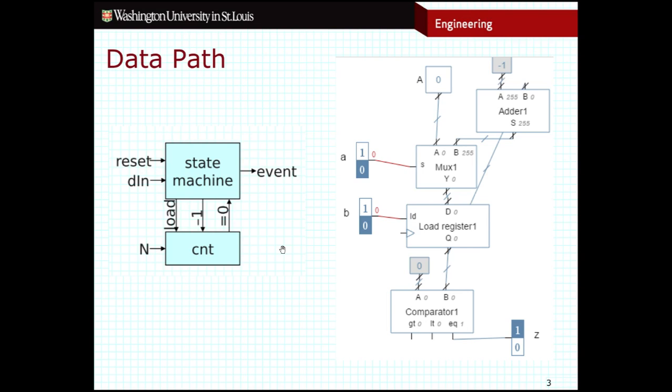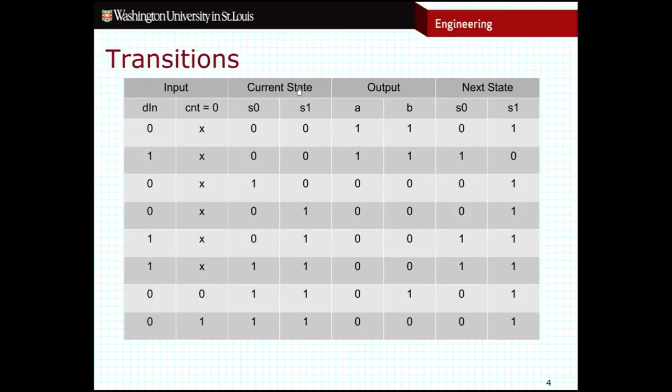So with that in mind, our process is going to be the same. We're going to construct a transition table, choose an encoding, for example, either binary or one-hot encoding, and then try to derive equations for all of the outputs, making sure to include the outputs to the data path as well as the overall outputs. So let's take a look at what that looks like.